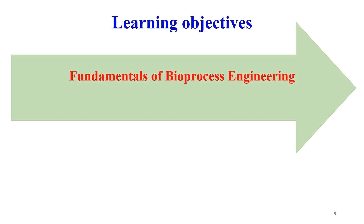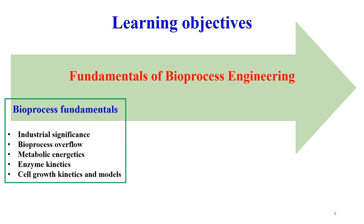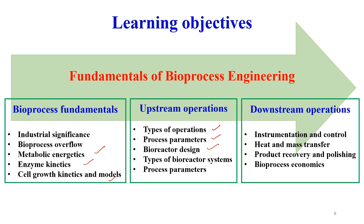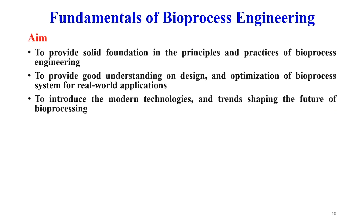The learning objectives for this course include fundamentals of bioprocessing such as metabolic energetics, enzyme kinetics, and cellular growth kinetics, followed by upstream processing, types of operations, process parameters, bioreactor design, downstream processing, product recovery, bioprocess economics, instrumentation control, and heat and mass transfer.